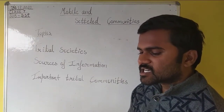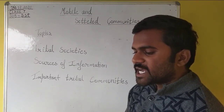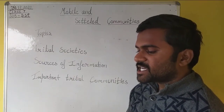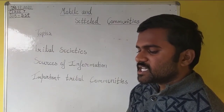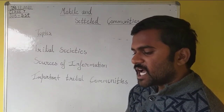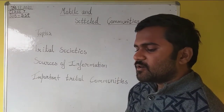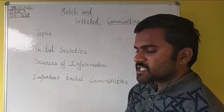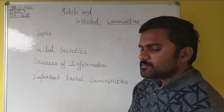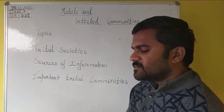The important tribes of the medieval period were the Khokars and Gakkars of Punjab, the Langahs and Arghuns of Multan and Sind, the Gaddis of Himachal, the Nagas of the north-east, the Cheros of Bihar and Jharkhand, the Mundas and Santhals of Bihar, Orissa and Bengal, the Gonds of Chhattisgarh and Madhya Pradesh, and the Rajgonds of Madhya Pradesh. The Kohlis were also notable.